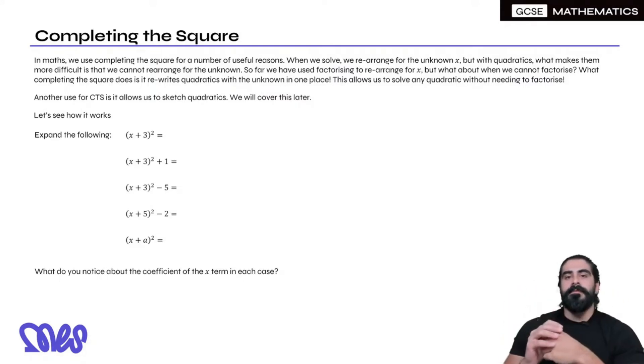So far we have used factorizing to rearrange for x, but what happens when we can't factorize? What completing the square does is it rewrites the quadratic with the unknown in one place.